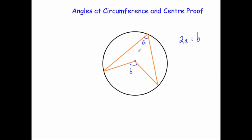What I'm going to do is join up the centre to a point on the circumference. Now we can notice we've got two smaller triangles. Focusing on the left-hand triangle, this line is the radius, marked R, and this line here is also the radius, marked R.